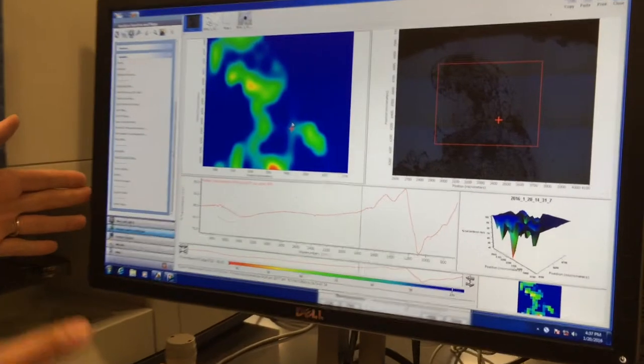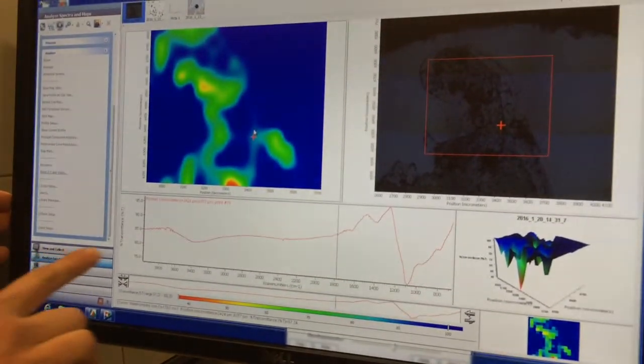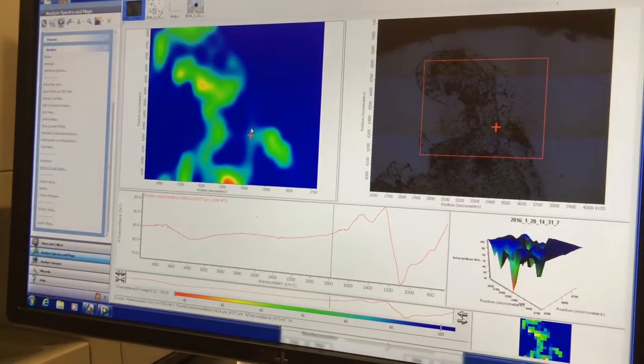What we're seeing here on the screen is a basic layout of one of the mapping features, as well as some of the spectra generated from the sample from inside the crab.